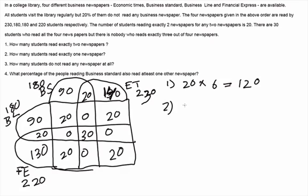Second question says how many read exactly one? Only ET was 140, only BS was 90, only Business Line was 90 and only Financial Express was 130 which makes it how much? 90 and 90 is 180, 180 and 140 will be 320. 320 and 130, so this comes out as 450 is my answer for the second one.